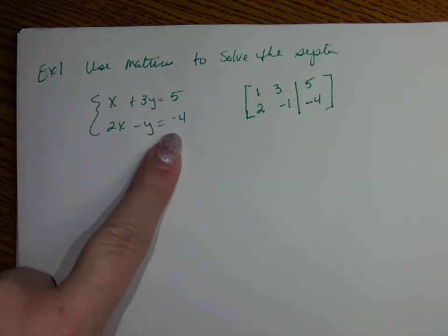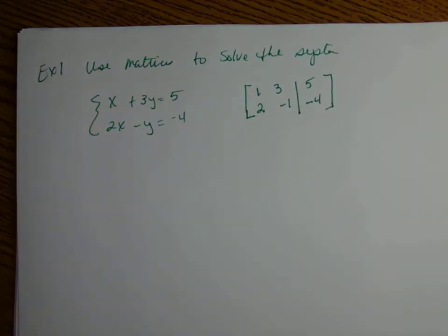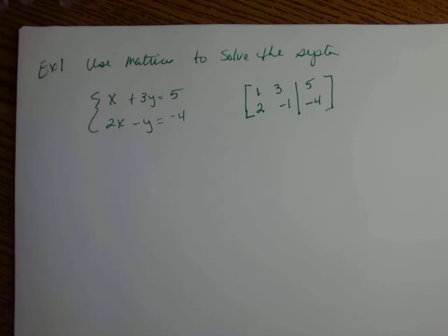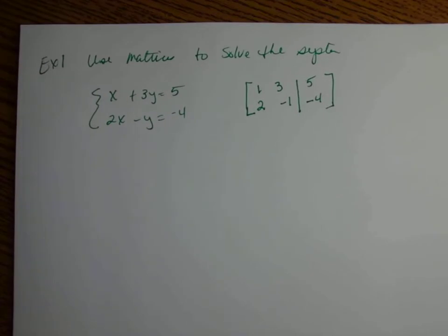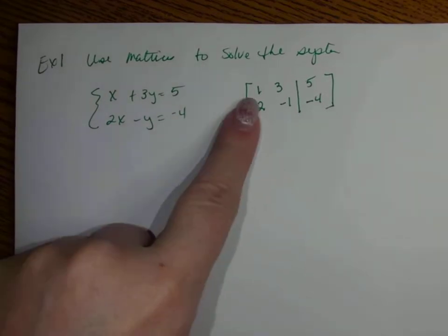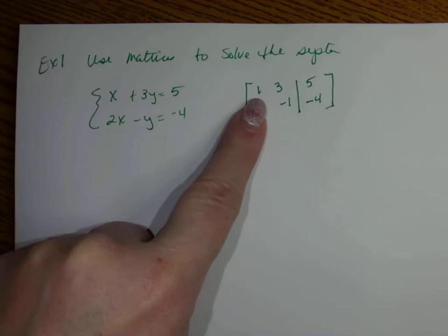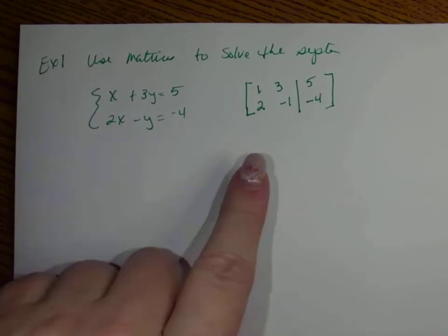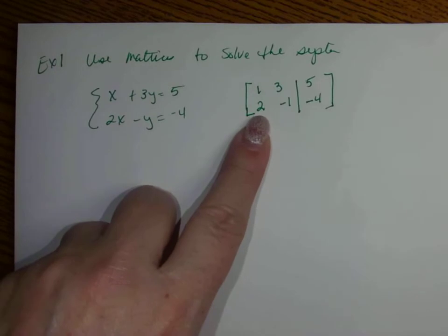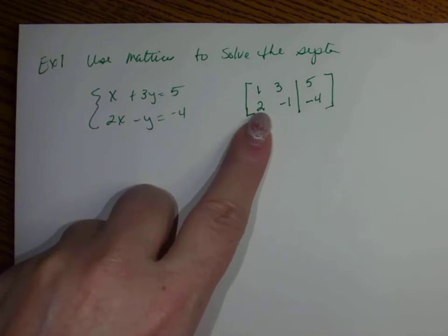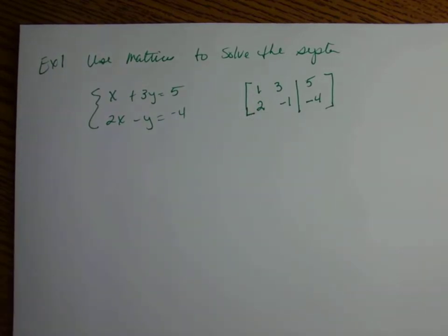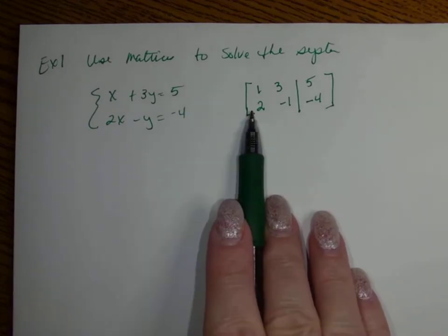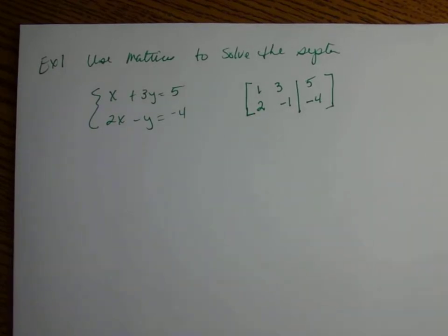The first thing you have to do is write your matrix. The first goal is to get a 1 in row 1, position one — we already have a 1, so we don't have to do anything. Our next goal is to get this 2 to be a 0. We have to think: how do I get 2 to become a 0? I can't multiply by 0 because that would make everything 0.